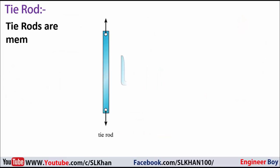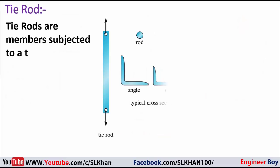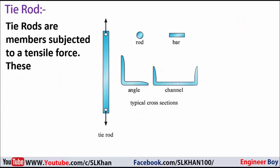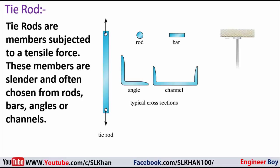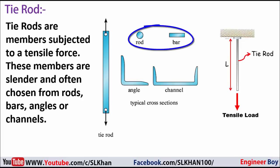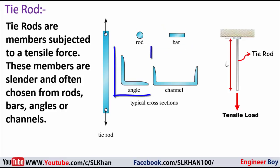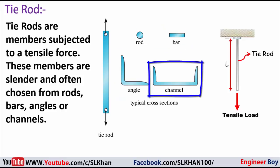And then come tie rods. These are members subjected to tensile force. These members are slender and are often chosen from rods, bars, angles, or channels.